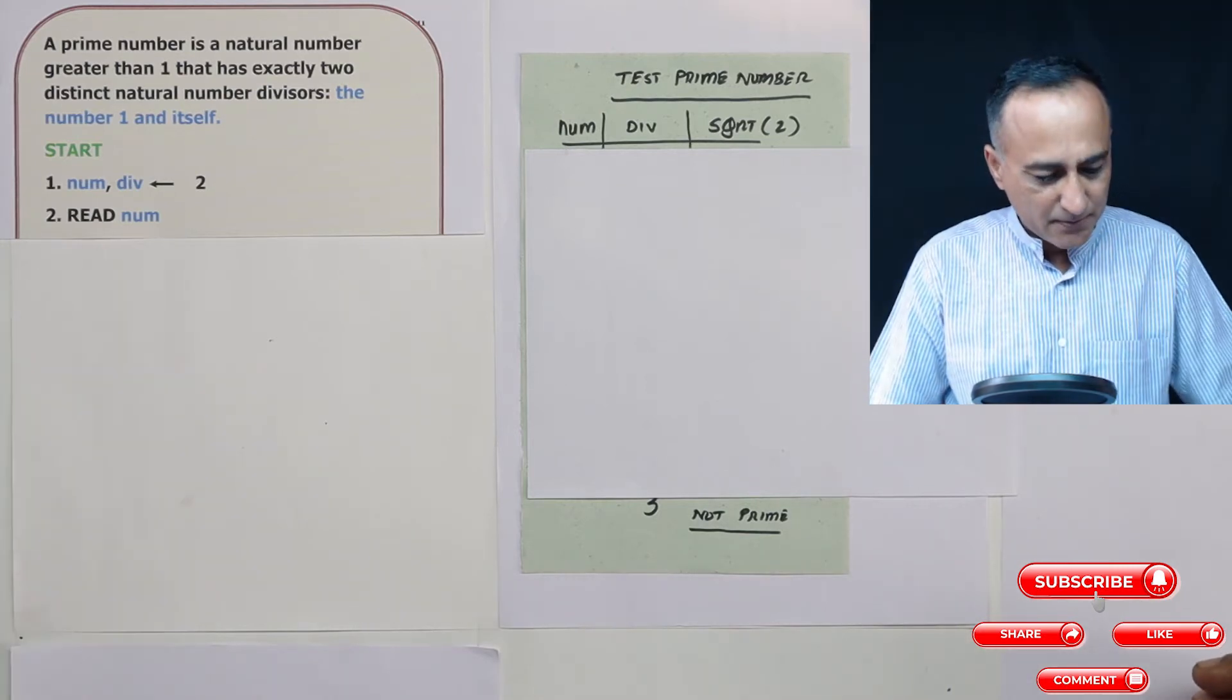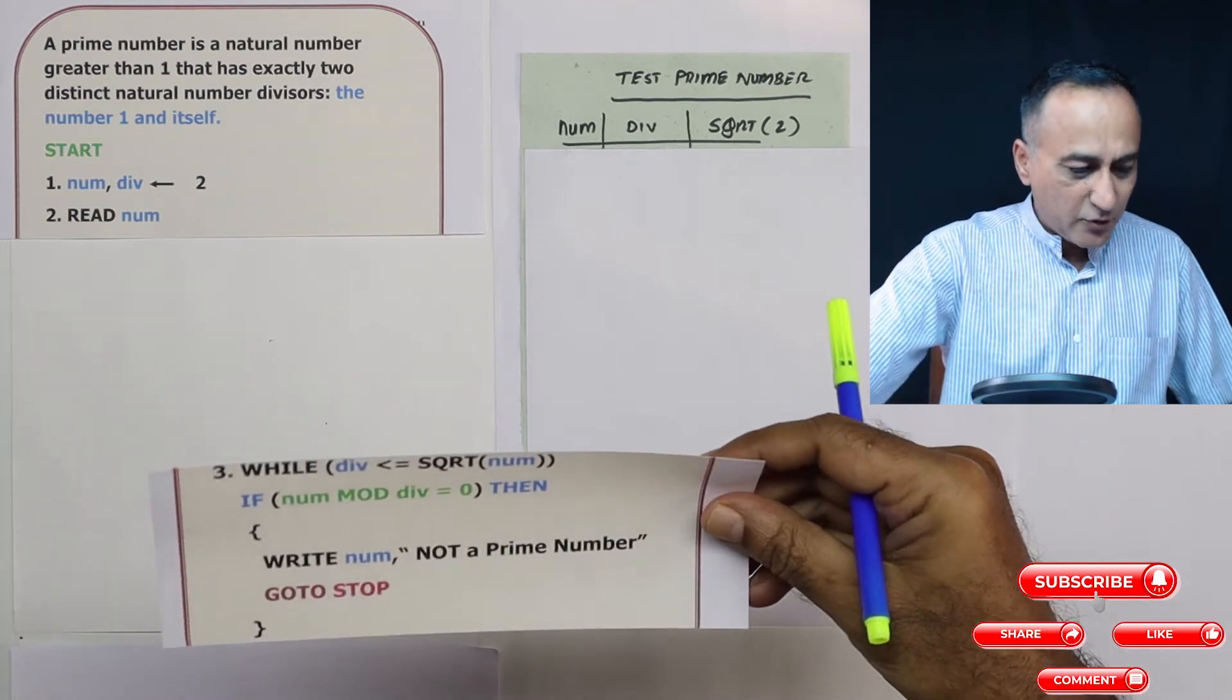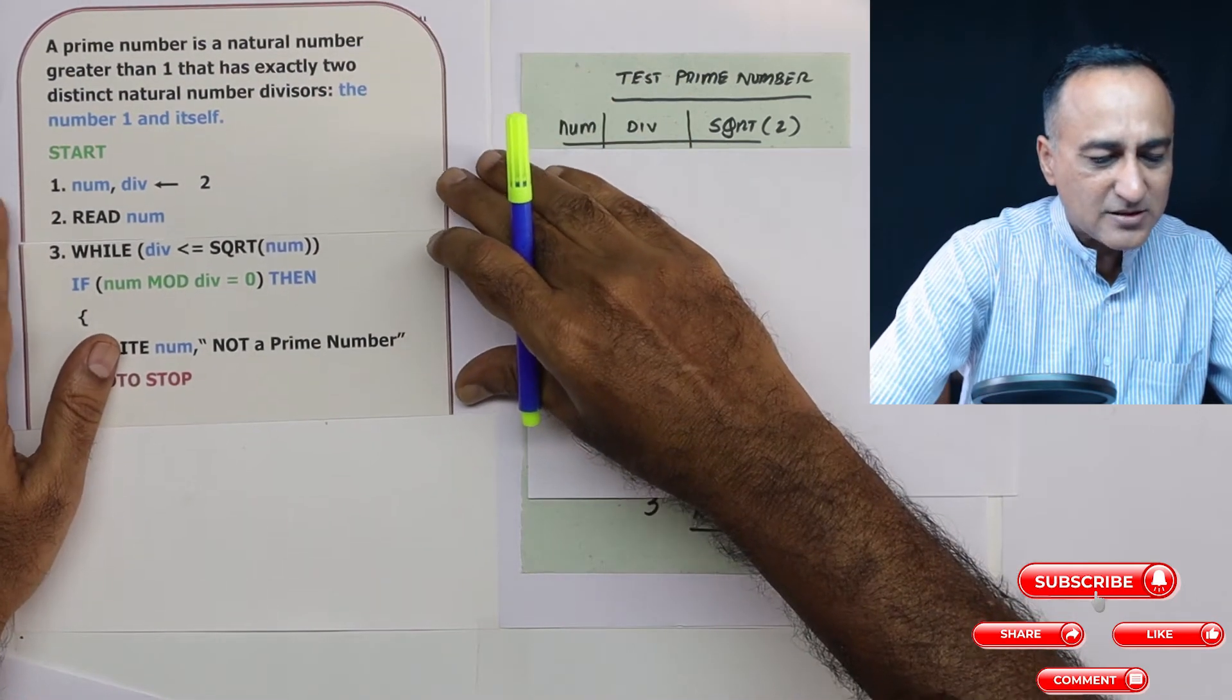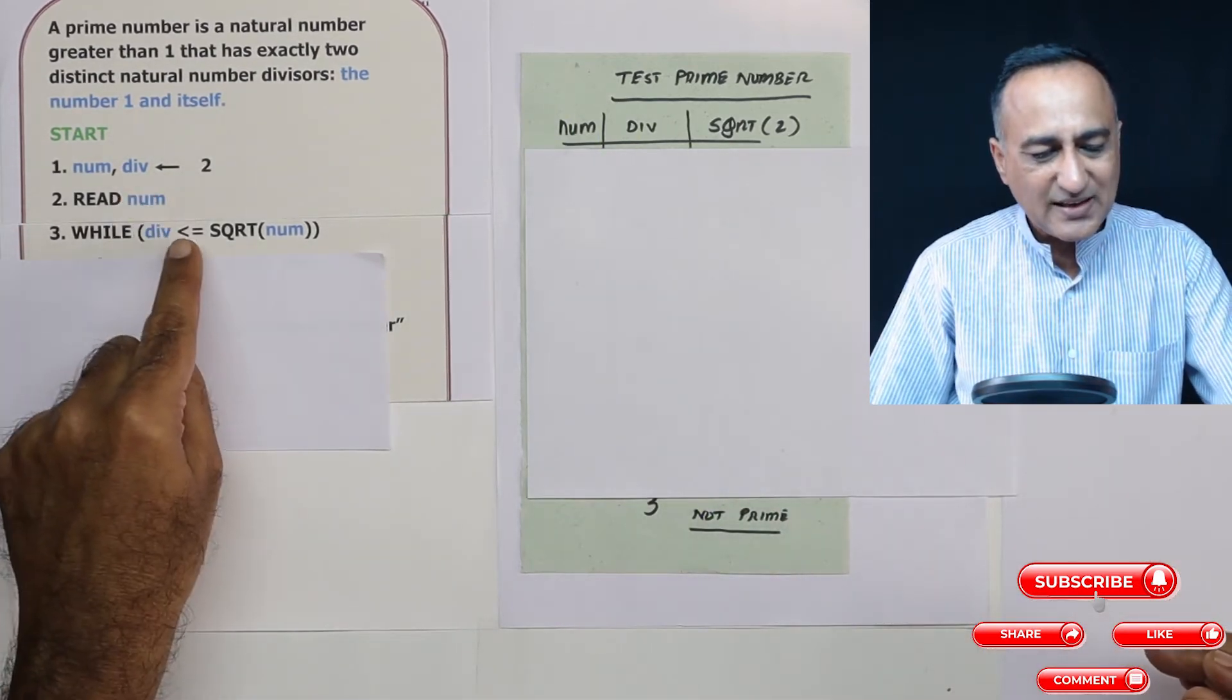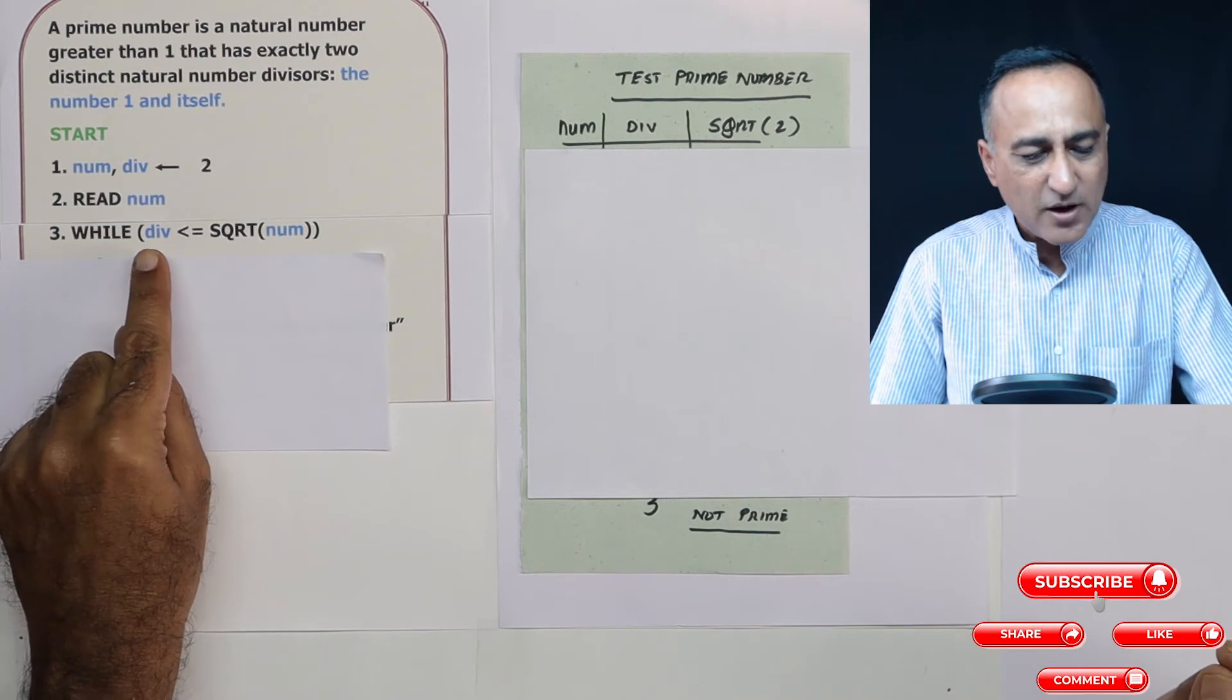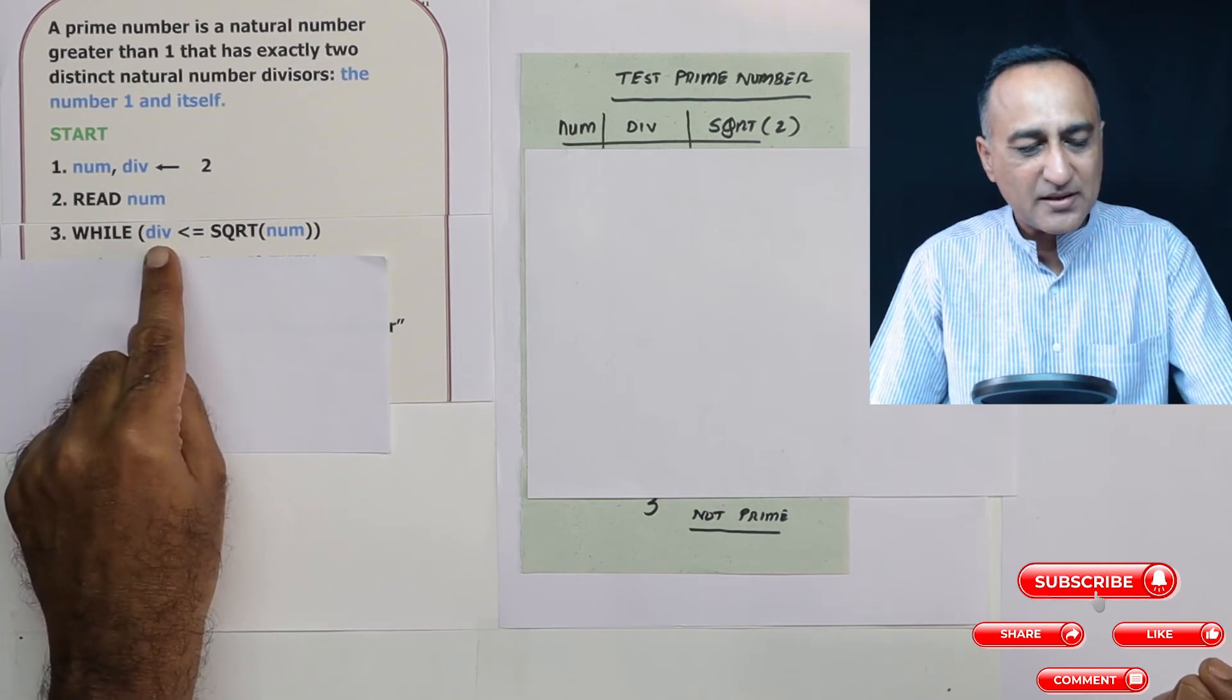I'm reading a number. Then once I read a number, my condition is going to be how long should I keep trying to divide that particular number. I am going to divide that particular number as long as the value of the divisor is less than or equal to square root of that number. In case of 37, the last value of divisor is going to be 7. After 7, there is no point in trying to divide 37 by the divisor.